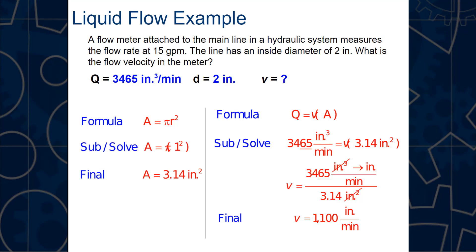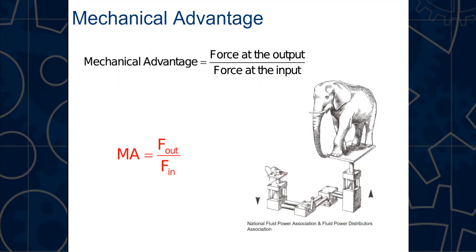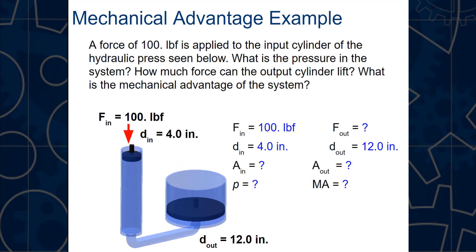Mechanical advantage in hydraulics follows the same formula as simple machines: MA = force out ÷ force in. Here's an example: a force of 100 foot-pounds is applied to the input cylinder of a hydraulic press. We need to find the pressure inside the system, how much force the output cylinder can lift, and the mechanical advantage.